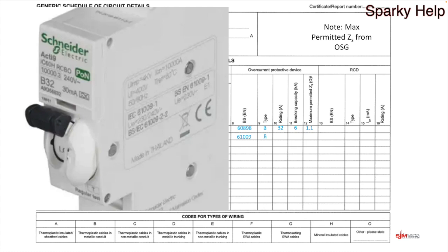So that information can go in — put the dash 1 in if you wish, but it's 61009. The type is the overcurrent part shown on the front: it says B, so that goes in as type B. The current rating is the number after that letter, which is 32. The breaking capacity on this one is 10kA. Then we have the maximum permitted ZS — we'll come back to that. But let's move on because the next part is the RCD section.